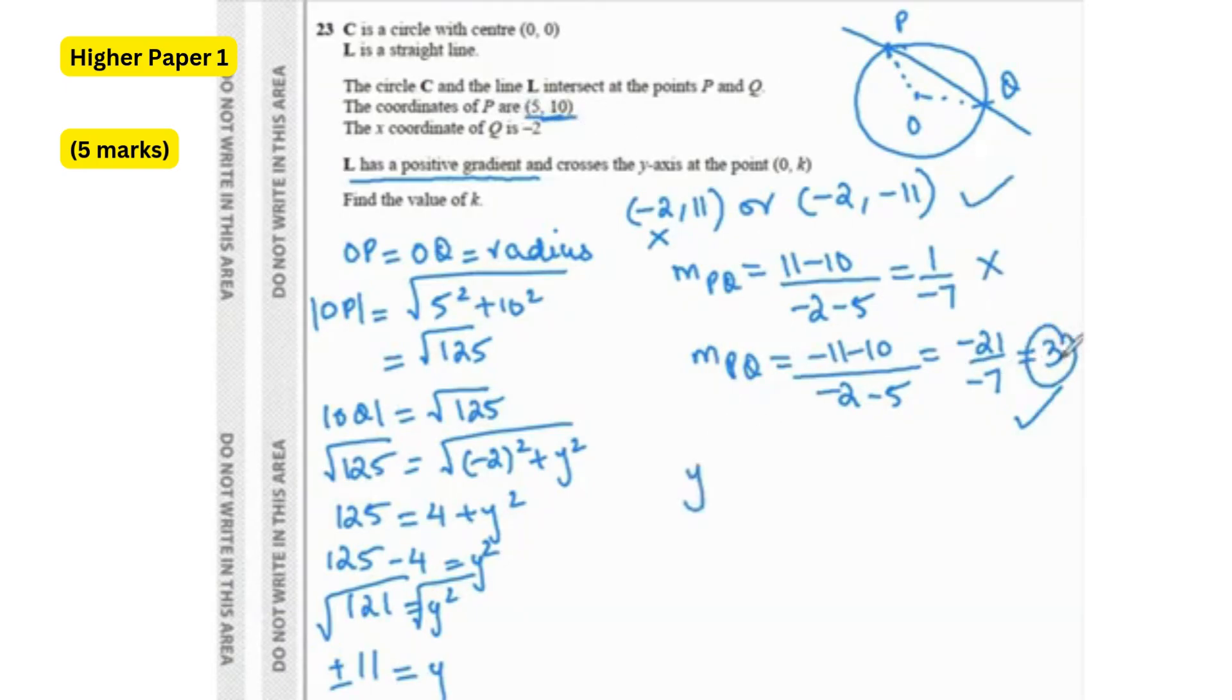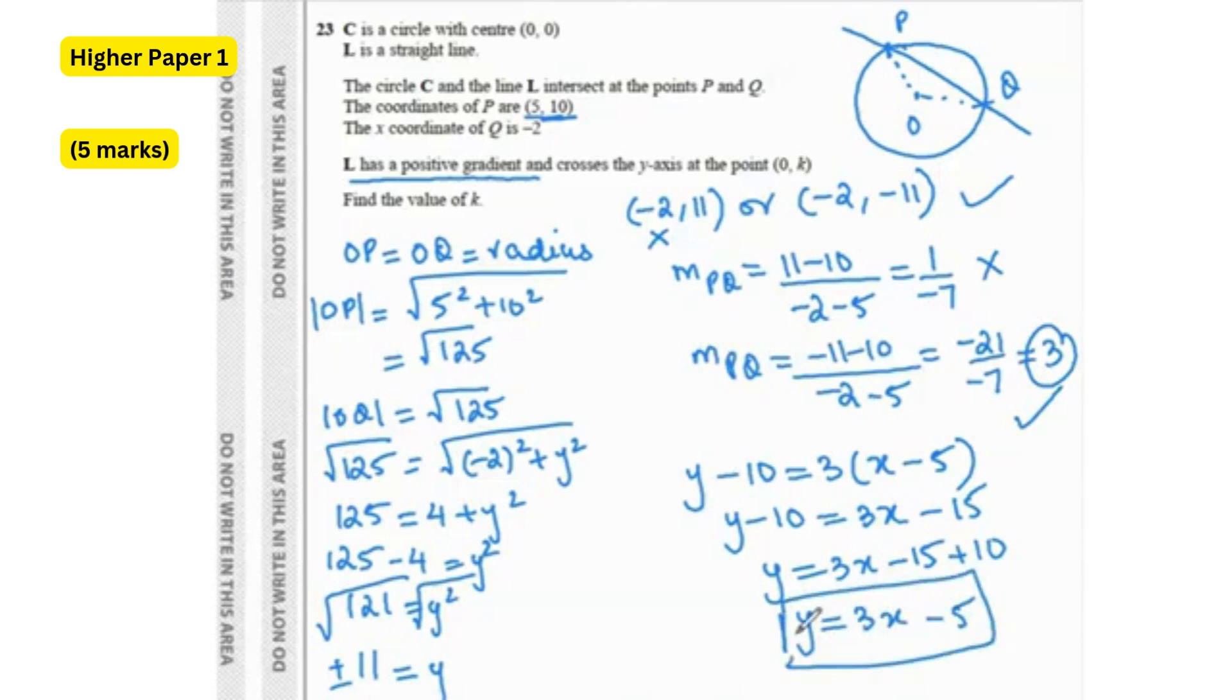I'm going to take 5,10 and this gradient. Y minus 10 equals to 3 times X minus 5. Y minus 10 equals to 3X minus 15. Y equals to 3X minus 15 plus 10. And Y equals to 3X minus 5. This is our equation for the line PQ or line L. Now they want us to find the K value where it's the y coordinate of this point. So we put X equals to 0 and Y equals to K. So K equals to 3 times 0 minus 5. K is negative 5. That is your final answer.